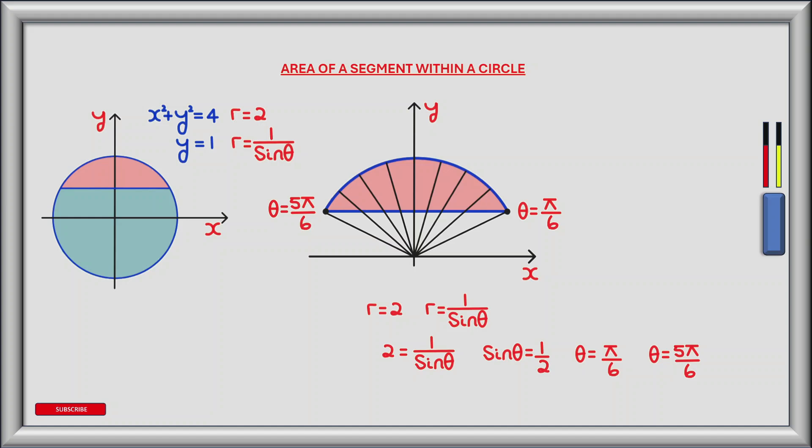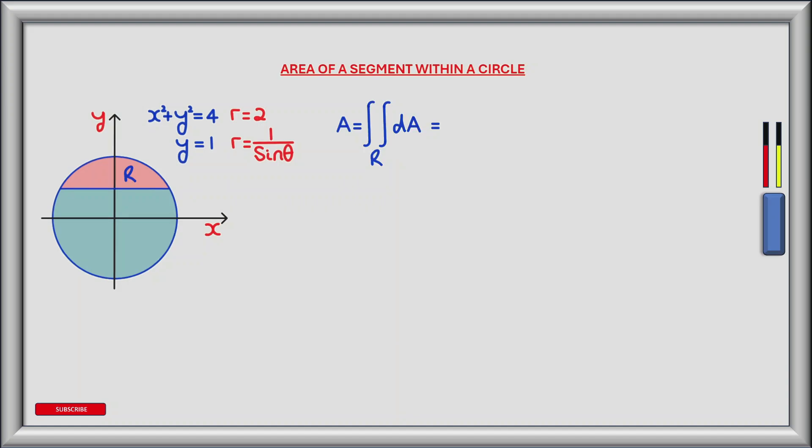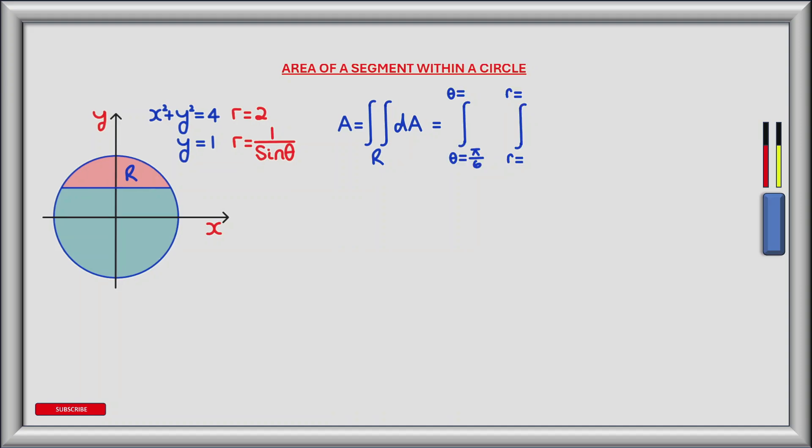We are now in a position to start defining the limits of integration as r rotates about theta, which will be the outer of the two integrals. The area of a region R can be defined as a double integral over the region R where we sum infinitesimally small pieces of area shown as dA. In this case the region is a single sector represented by a double integral. The sector begins where theta equals pi by 6, which is where the horizontal line first intersected with the circle, and continues to where theta equals 5 pi by 6.